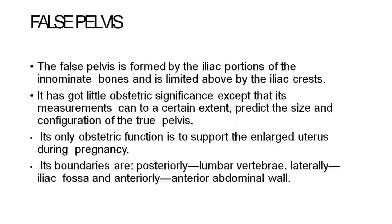False pelvis is formed by the iliac portions of the innominate bones and is limited above by the iliac crest. It has little obstetric significance except that its measurements can to a certain extent predict the size and configuration of the true pelvis. Its only obstetric function is to support the enlarged uterus during pregnancy. Its boundaries are posteriorly the lumbar vertebrae, laterally the iliac fossa, and anteriorly the anterior abdominal wall.